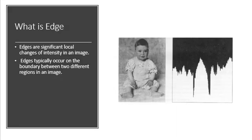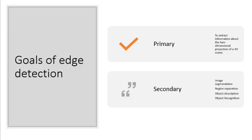Edge detection. So what is an edge? Edges are significant local changes of intensity in an image. Edges typically occur on the boundary between two different regions in an image. We can also say that sudden changes or discontinuities in an image are called edges. Significant transitions in an image are called edges.